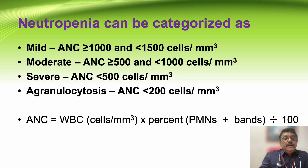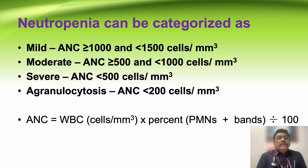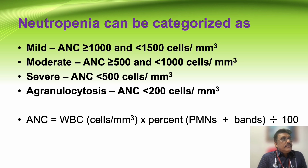Neutropenia can be categorized into three groups: mild (absolute neutrophil count 1000–1500), moderate (500–1000), and severe (less than 500). In severe neutropenia, there is a condition called agranulocytosis, where granulocytes are virtually nil and the absolute neutrophil count is less than 200. At this level, there is essentially no defensive function — the defensive mechanism is absolutely zero.